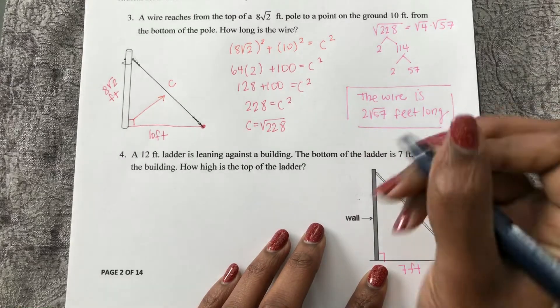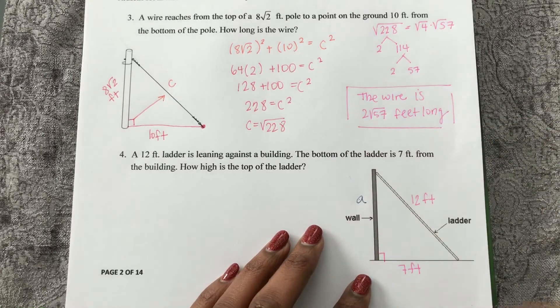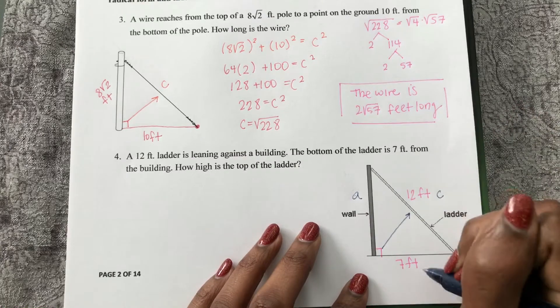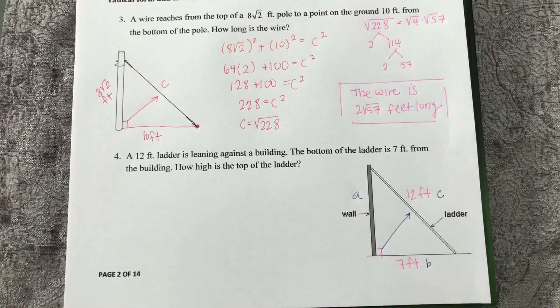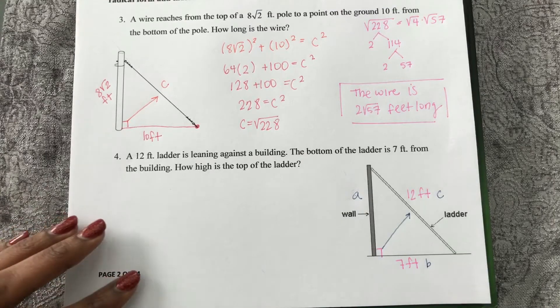And we're looking for how high up is this ladder. So we're looking for, let's say, an A value because this is my C, my hypotenuse. So that can be B. So I could use the Pythagorean theorem to find this missing side.